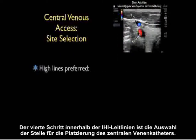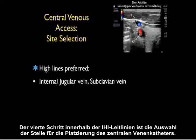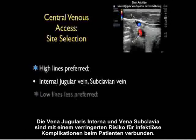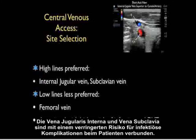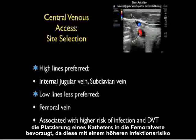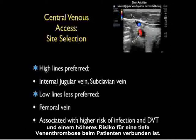The fourth step is adequate attention to site selection for a central venous catheter. In general, high lines are preferred — the internal jugular vein and subclavian vein are associated with a decreased risk of infectious complications. Low lines are less preferred, as placement of a catheter into the femoral vein is associated with a higher risk of infection and DVT.